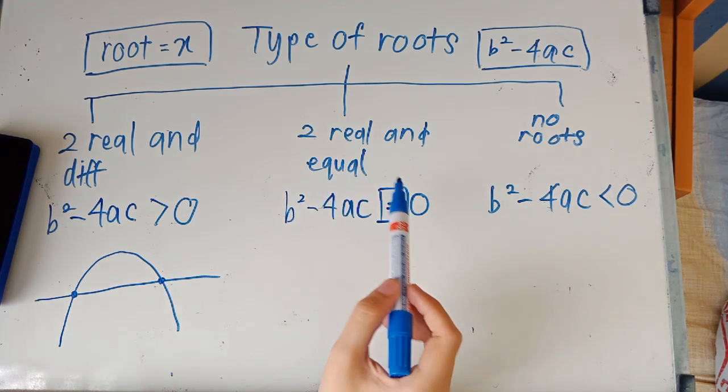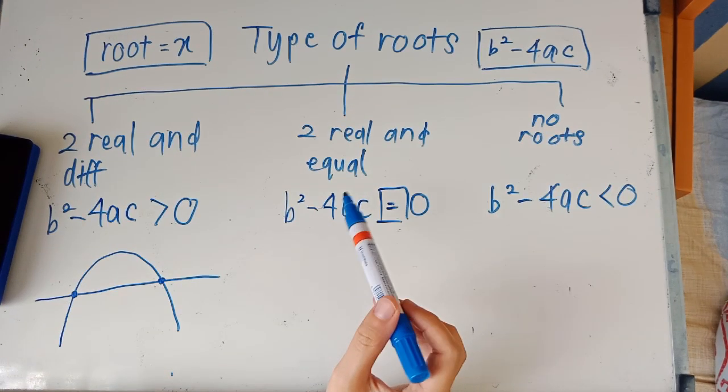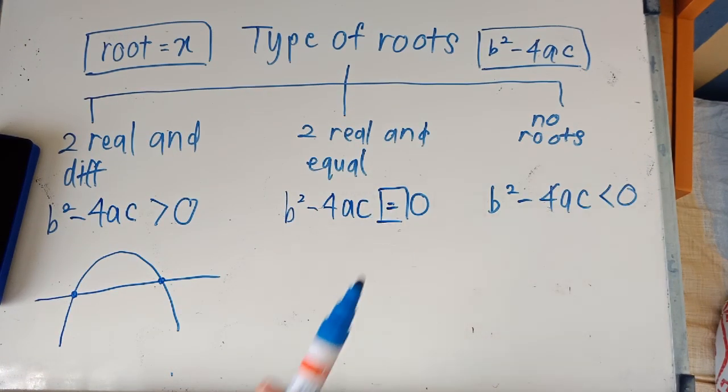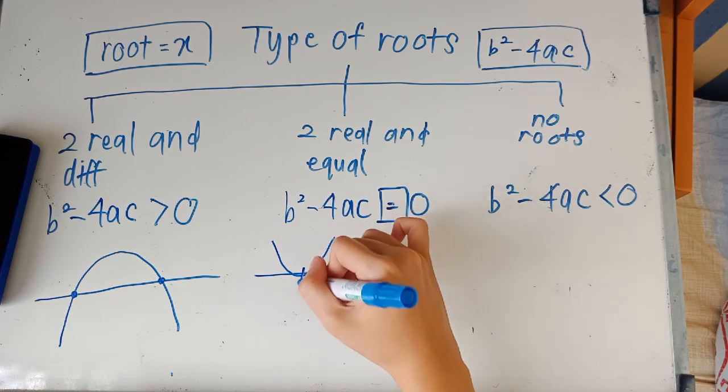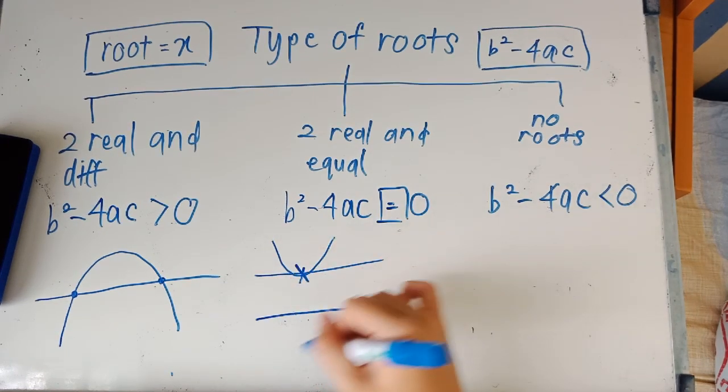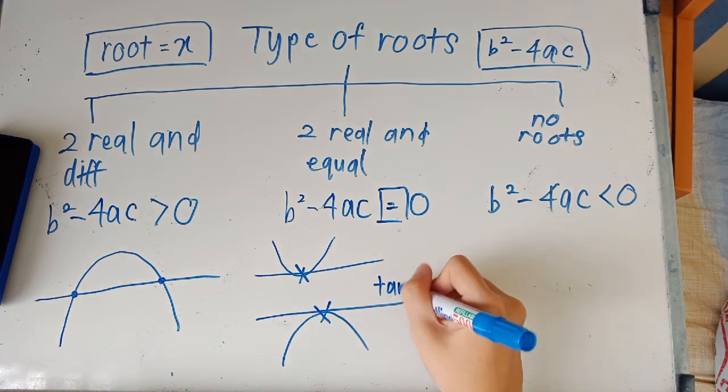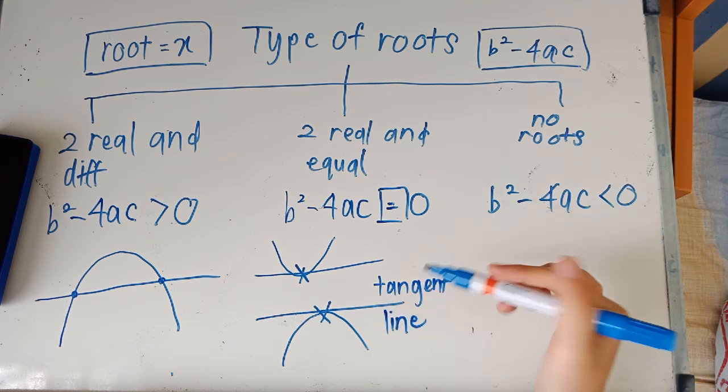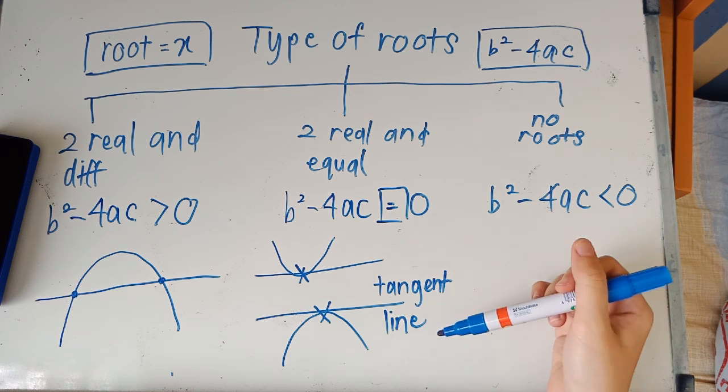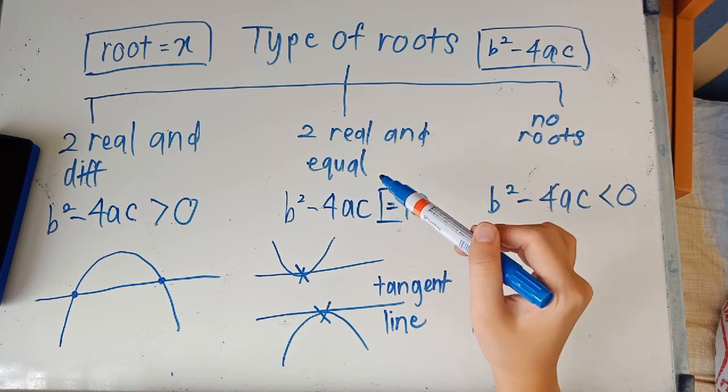So now we move on to the next one, which is two real and equal roots. For equal roots, it intersects the curve at only one point. And it is tangent to the curve. So an example would be this. It intersects at only one point here. Or the graph could be this way. It intersects at only one point. And this is also called a tangent line. So this is another key word that you might want to take note of. When it's a tangent line and it intersects one, it would be called as two real and equal roots.